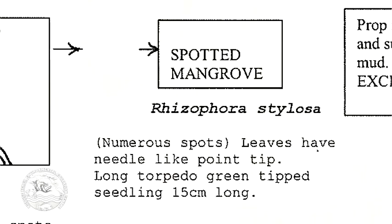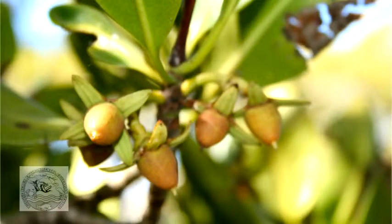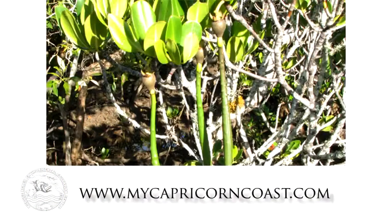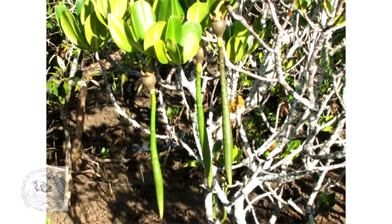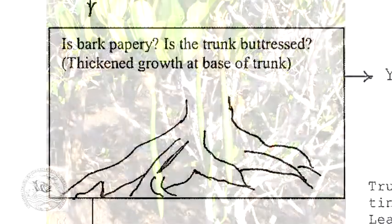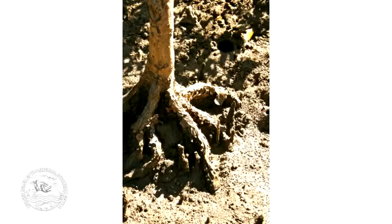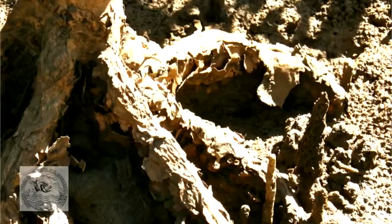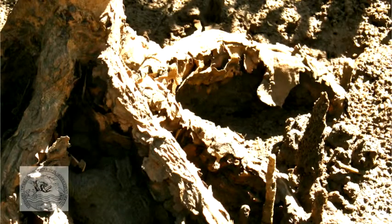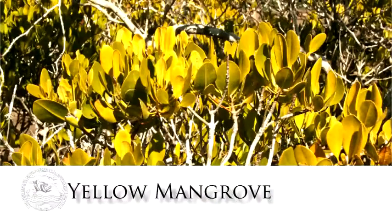The red mangrove grows the full length of the Queensland coast with a very long seedling like a torpedo, which plunges into the mud to hold it firmly as it grows. When using the key we now look at the next tree. Does it have papery bark at the base of the trunk? Does the root have buttress shapes? These are spreading buttresses that help to support the tree, with folds of papery bark between them. It is this papery bark that traps the oxygen while the base of the tree stabilises it.